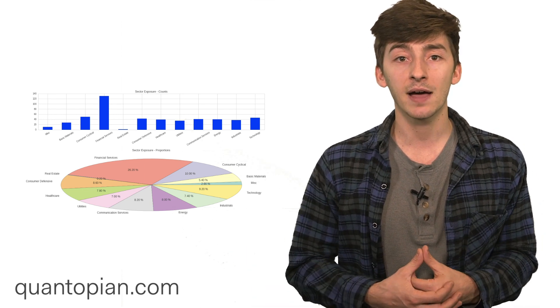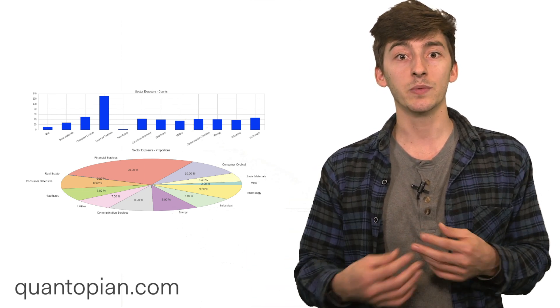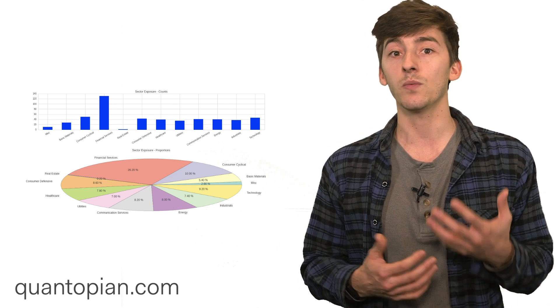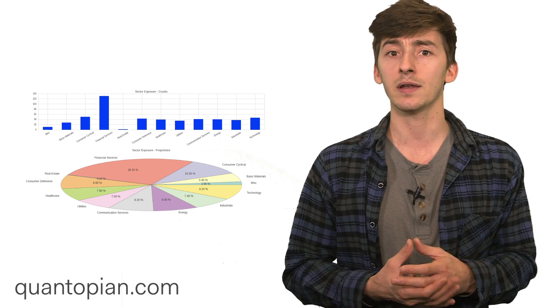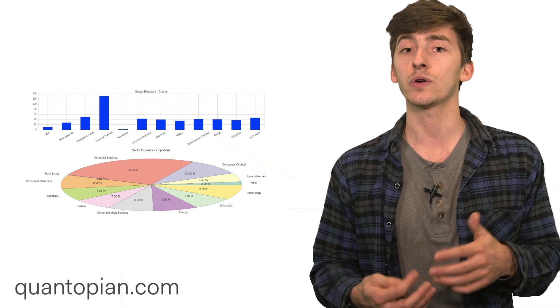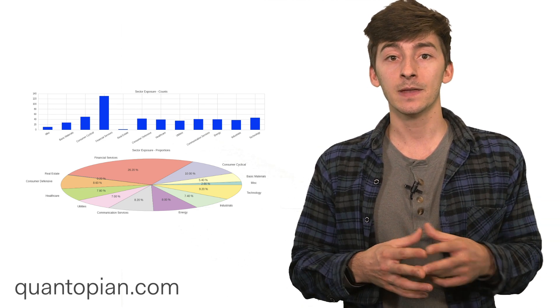This is the key advantage of having a trading algorithm in the first place, that we can quickly analyze many different individual securities and come to conclusions about whether we want to go long or short on any of them individually or collectively, and how long or short we want to be on those securities.